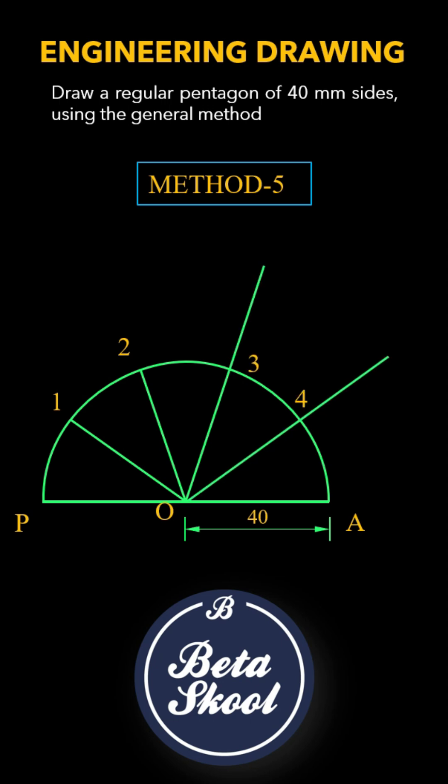Join O2, O3, and O4. The section lines passing through points 3 and 4 should be extended beyond the semicircle.